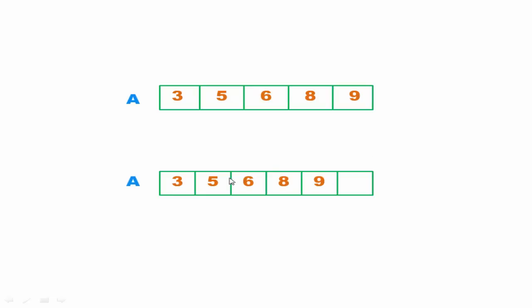Suppose this is a linear array A. This is the kth position and here we want to insert the element 7. But this position is already occupied by another element. So how can we insert the new element to this position? To insert the new element, first we have to create an empty space here.